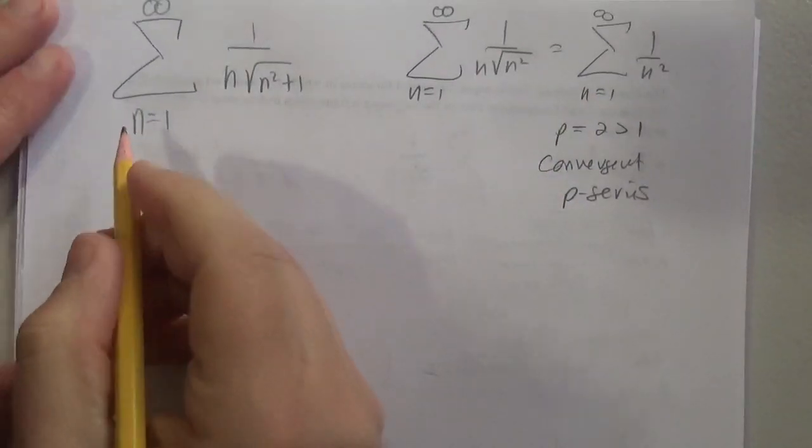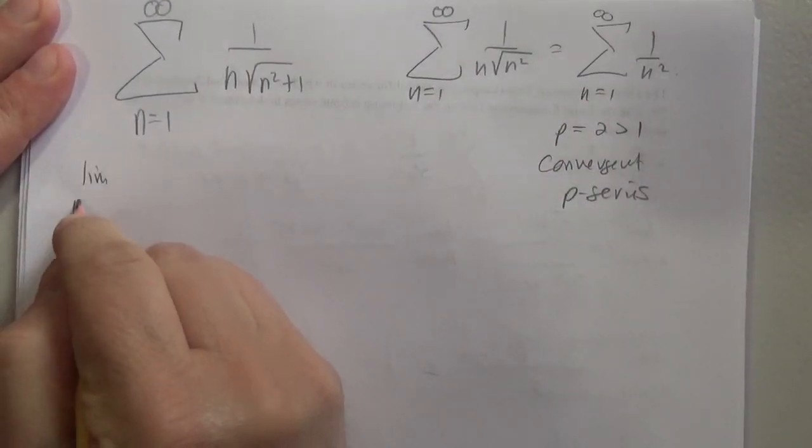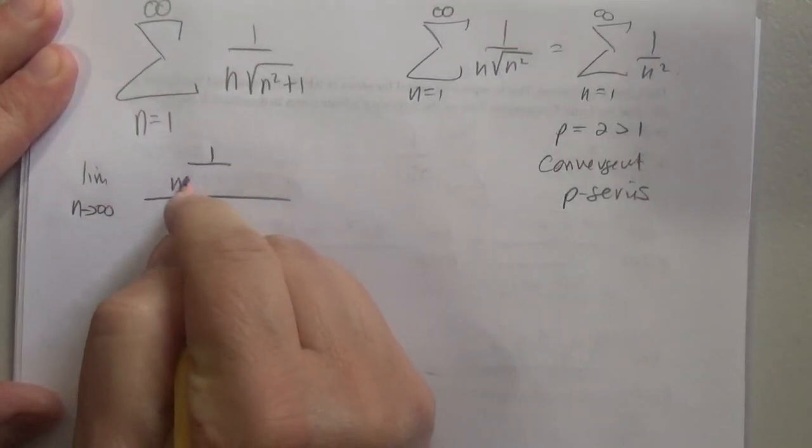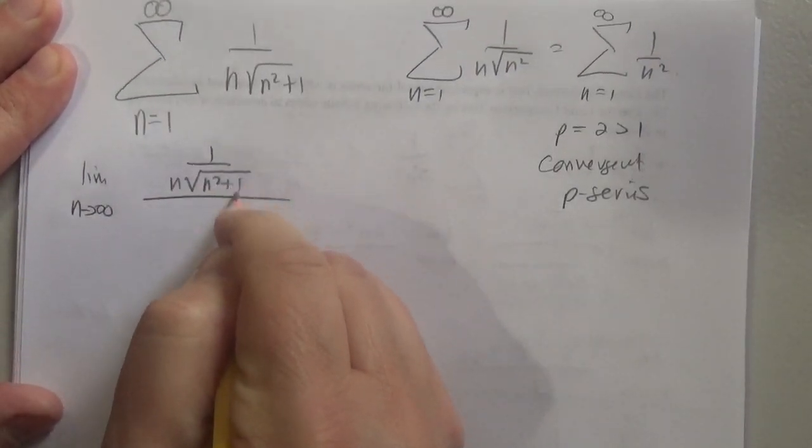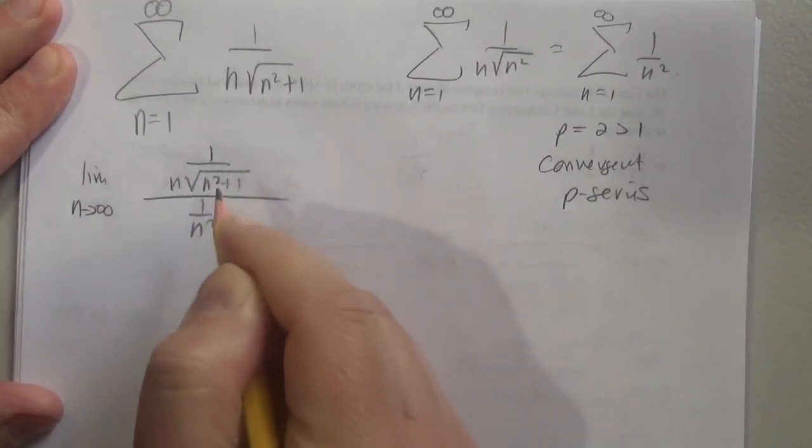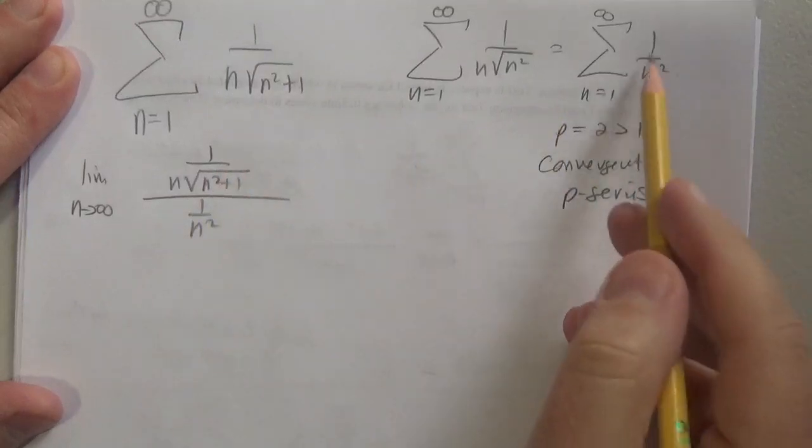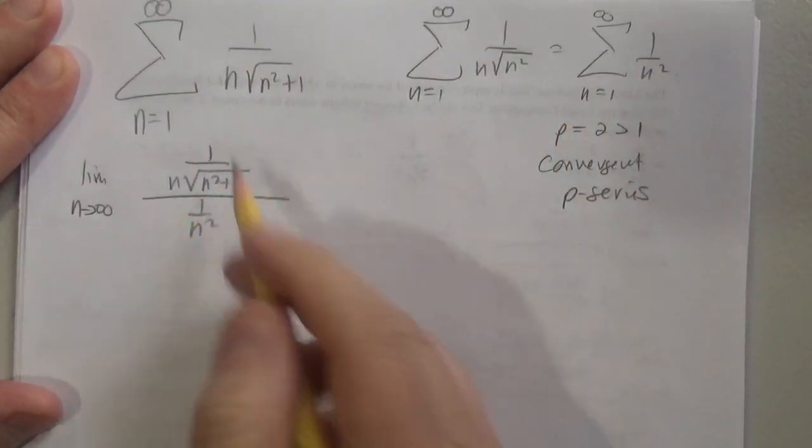So now I need to find the limit. Here is the limit as n goes to infinity of 1 over n times the square root of n squared plus 1, over 1 over n squared. It doesn't matter if I put the unknown series in the numerator or the known series in the denominator.